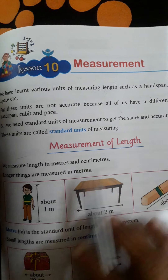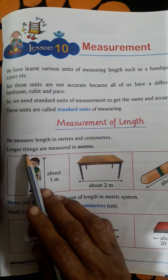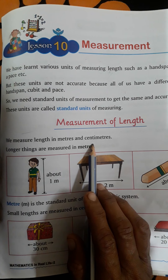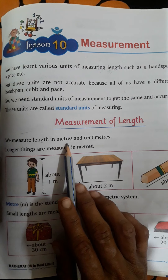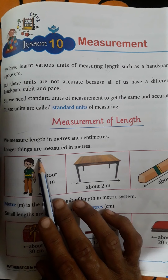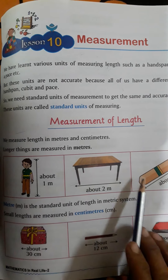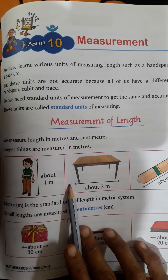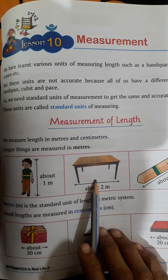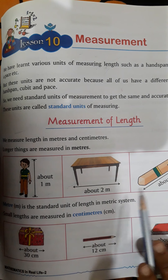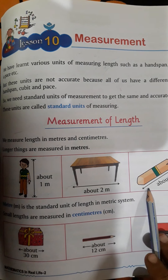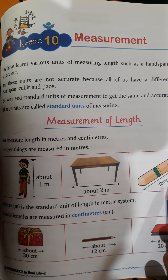Measurement of length — first, length. We measure length in meter and centimeter. Longer things are measured in meter. For example, a boy's height, table height, table length, and bed length — these are all measured in meter.